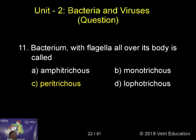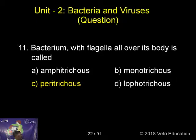A bacterium with flagella all over the body is called: A, Amphitricus; B, Monotricus; C, Peritricus; D, Lofotricus.